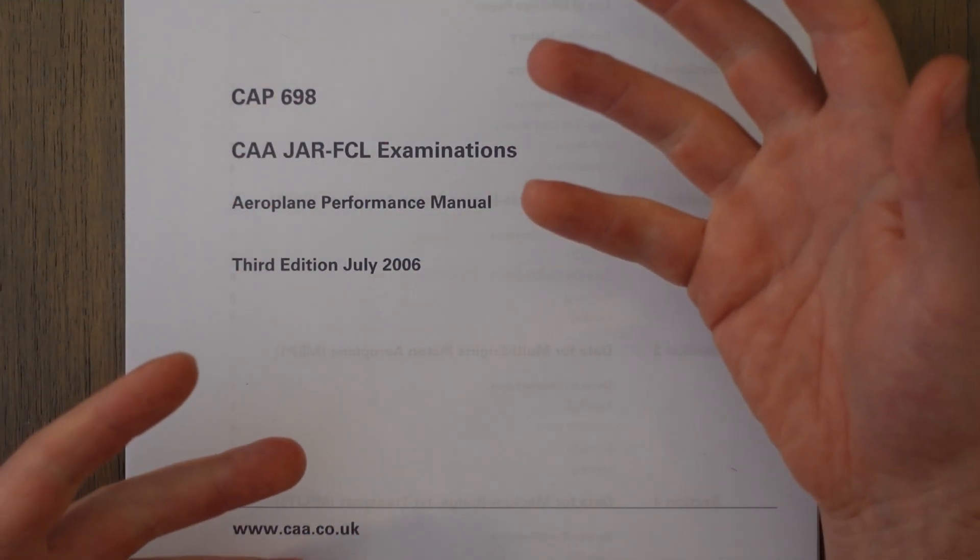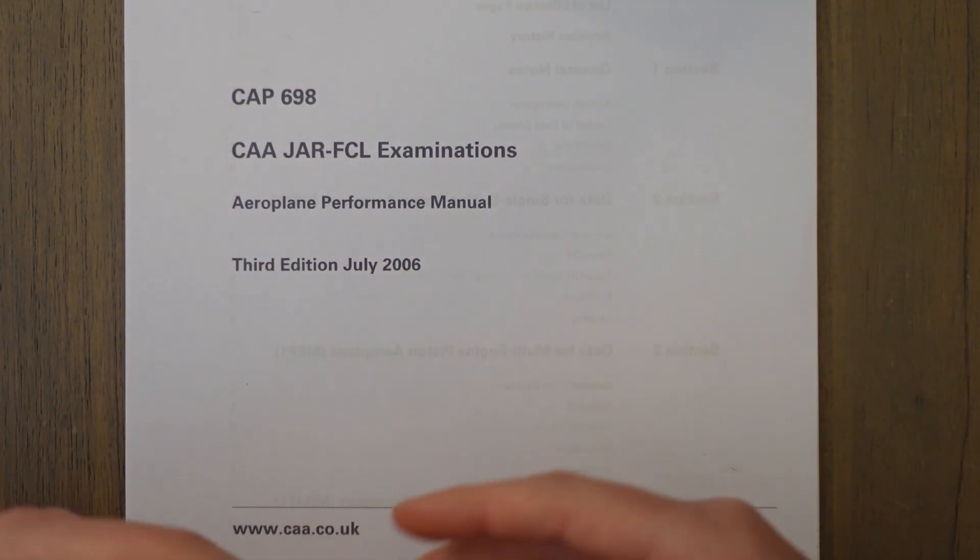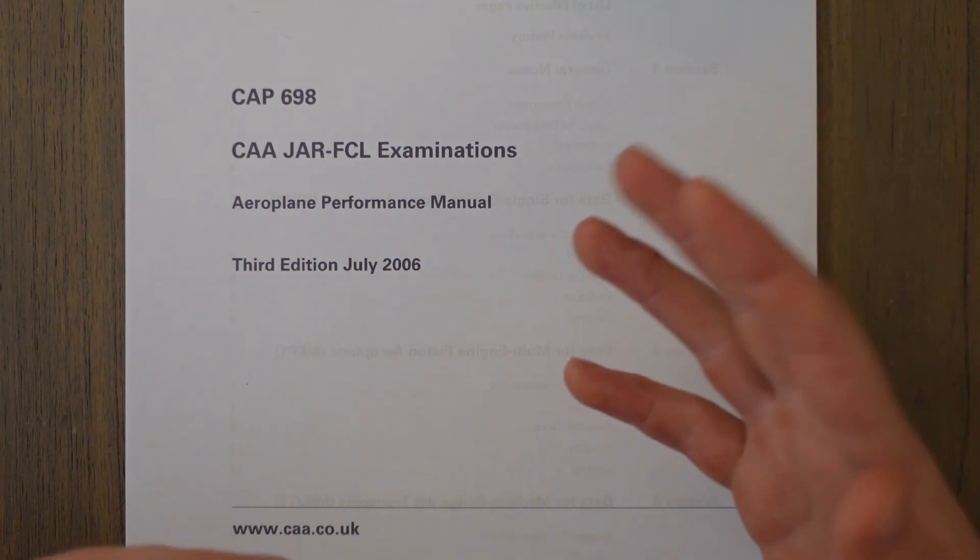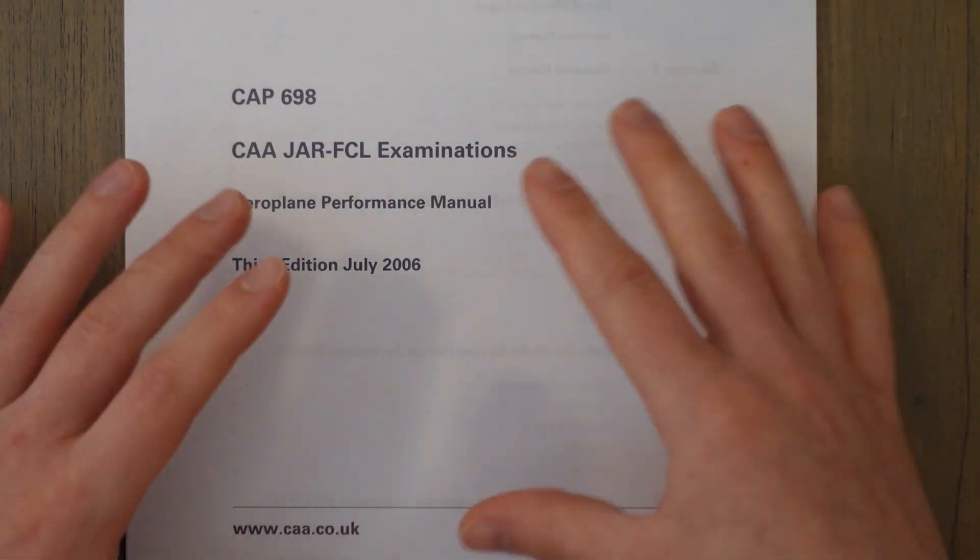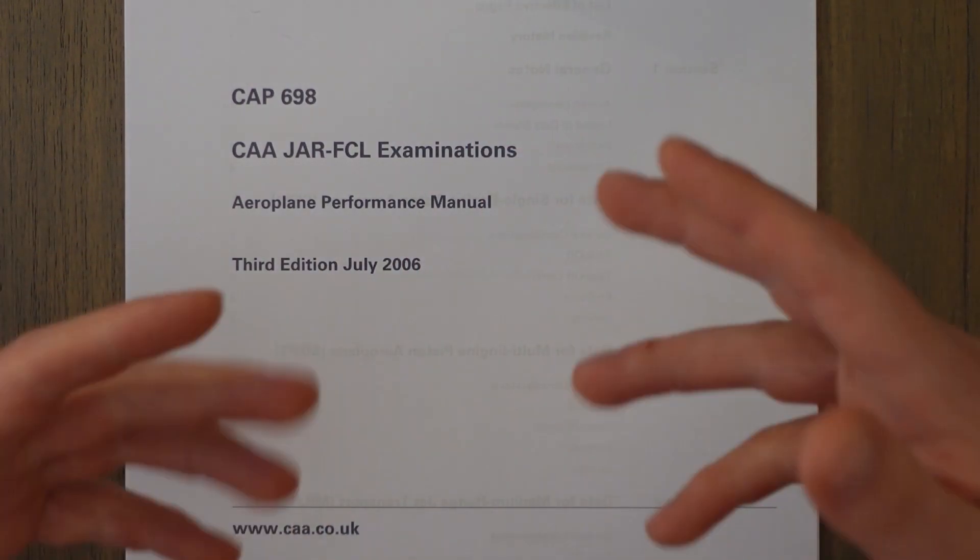Next, we're going to move on to Class A regulations, which apply to jets and large propeller aircraft. They're very similar. There's factors and slopes and headwind components, all that kind of stuff to think about. But it's just slightly different because we need to be a bit safer.